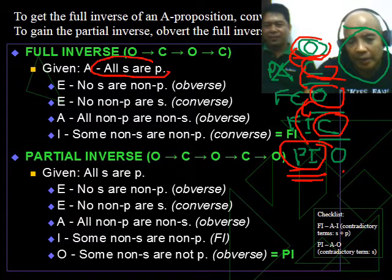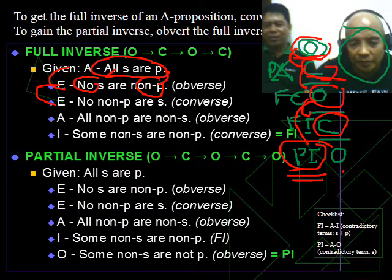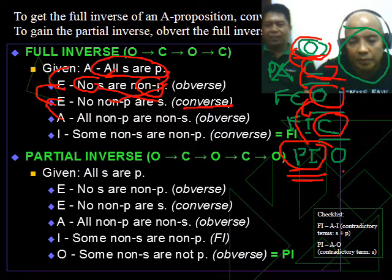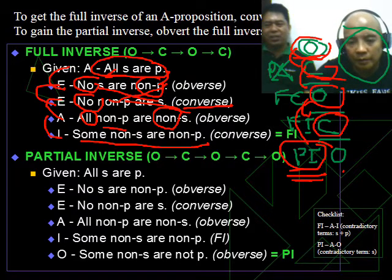From the given, all S are P. When you take the obversion, the A becomes E, no. From A to E, then contradict the predicate, so non-P. Now when you convert, interchange the position of S and non-P. The subject becomes the predicate and vice versa. Then the converse becomes the given to get the obverse. The E becomes all. All non-P are S. This is the full inverse.